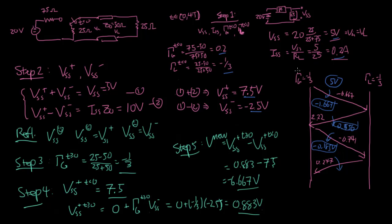Once you find these new reflection coefficients, know what the starting voltage is, and know what the newly propagated wave is, the rest goes just like a regular analysis of a bounce diagram with initially uncharged lines. The key thing is just keeping your head straight: figuring out what the new voltage that pops out is, updating your reflection coefficients, and then redoing what you know how to do.